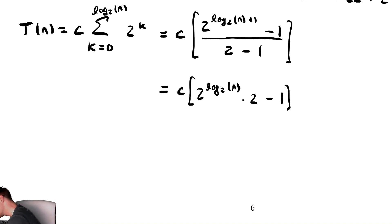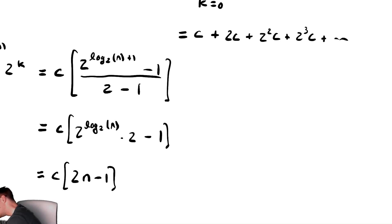This is equal to c times 2 n minus 1, and in case we want to write down what we did, here our first step was use finite geometric sum formula, geosum.